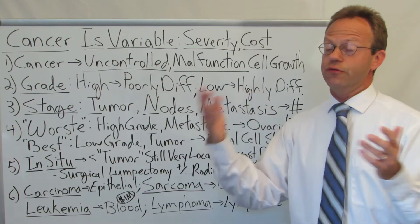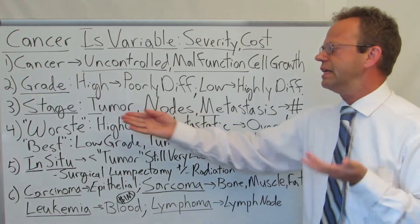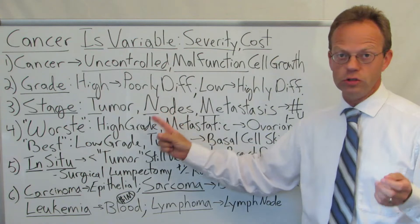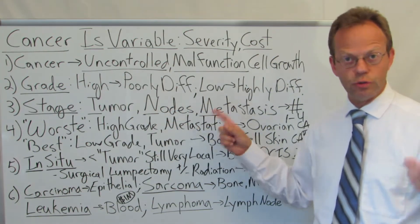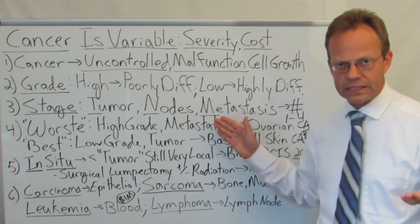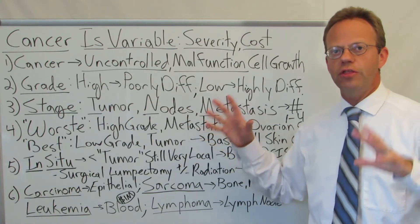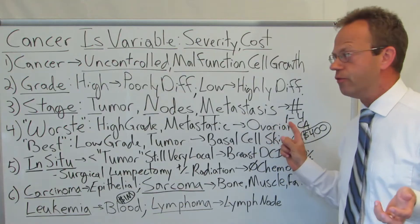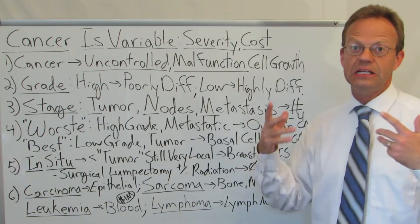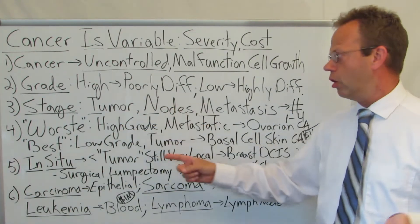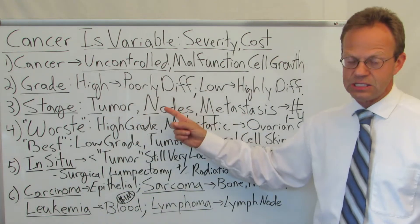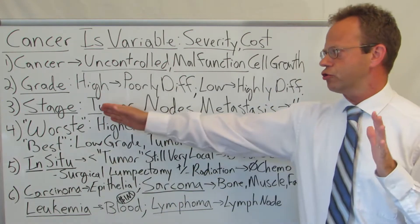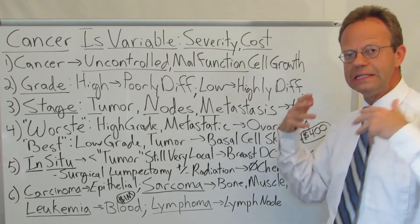When you hear about stage 4 or stage 1 cancer, those numbers come from rolling up the TNM scores. There's T1, 2, 3, and 4 depending on how big the tumor is; N1, 2, 3, and 4 for lymph nodes; and M1, 2, 3 for metastasis. By cancer type, those TNM scores roll up into stages 1 through 4. Stage 1 is typically just a tumor, nodes negative, no metastasis. Stage 2 is a larger tumor with no nodes and no metastasis. Stage 3 is often a really large tumor that has spread to the nodes but no metastasis. Stage 4 has a tumor, nodes, and metastasis.